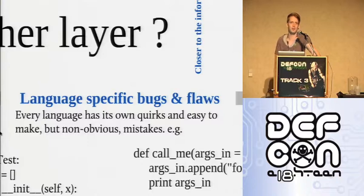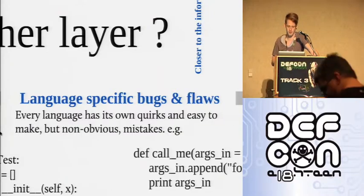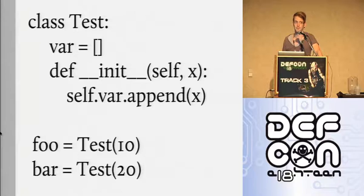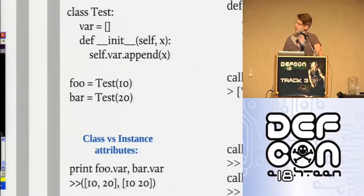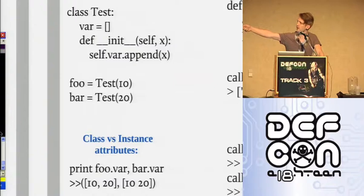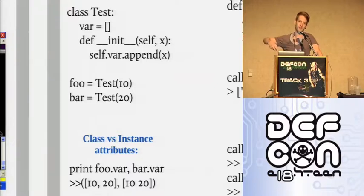Python is a fairly complex language with quirks and flaws, and a lot of people developing in it are less experienced and don't really understand how computers work. So there are mistakes that everybody makes. For example - anybody see the problem with this code? The var is a class variable rather than an instance attribute. So on foo and bar, which are instantiations of the test class, if you print out the var variable, both instances share the same variable because it's at the class layer. People make this mistake all the time. If they make a new instance of an object on a shared system, you can get access to other people's objects, which depending on the situation can be a good thing.